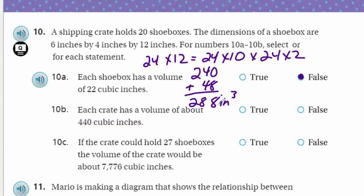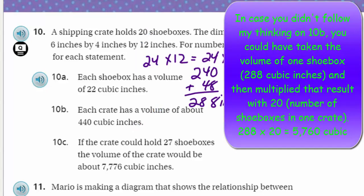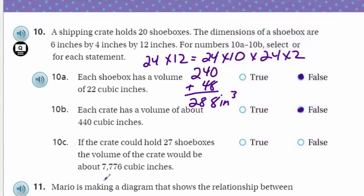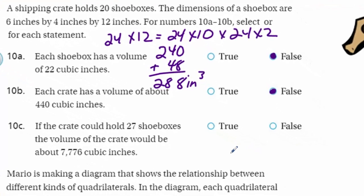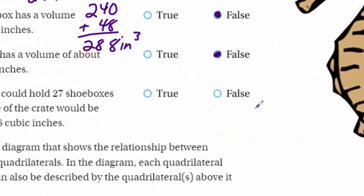It says each crate has a volume of about 440 cubic inches. I really wouldn't even have to figure this one out, would I? Look at this - this is one shoe box. If one shoe box is 288 inches cubed, doubling that would only be like a couple shoe boxes, and they're saying there are 20 shoe boxes in one crate. This can't even be true. I hope you're following me on thinking. You could go ahead and calculate 20 times that amount, but the number is going to be just too large.